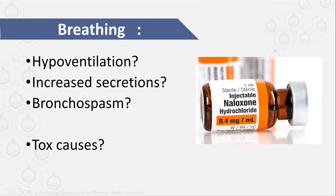For breathing, look at your patient. Is your patient breathing? Is there hypoventilation? If hypoventilating, think about opioids — do you need to give naloxone? Are there increased secretions? What toxin causes increased secretions — organophosphate? Is there any bronchospasm? While you are surveying your patient, start thinking about the causes.